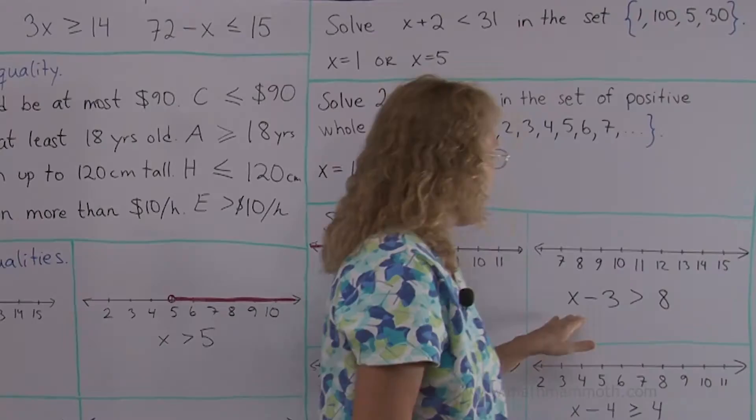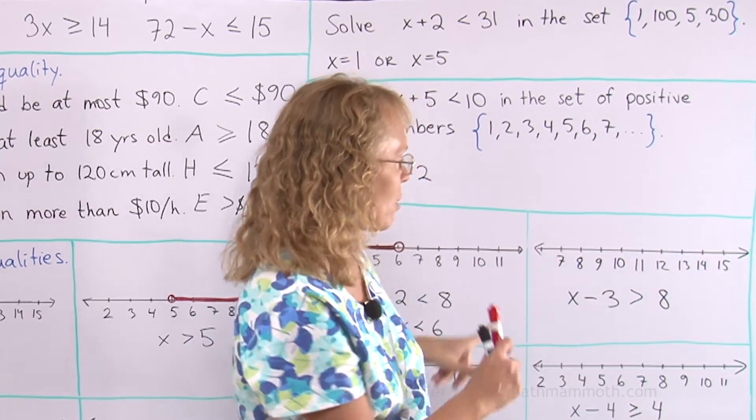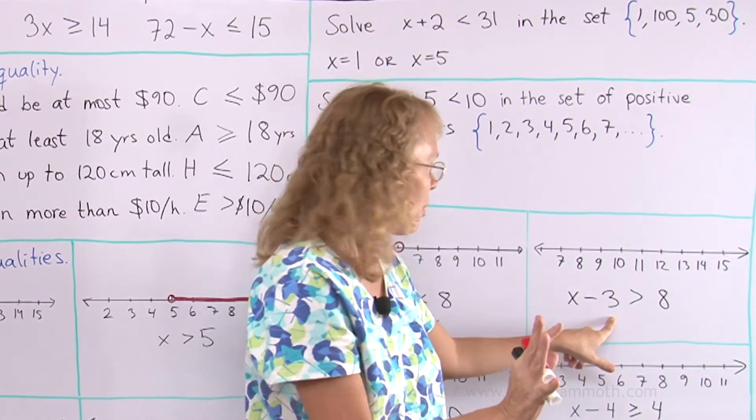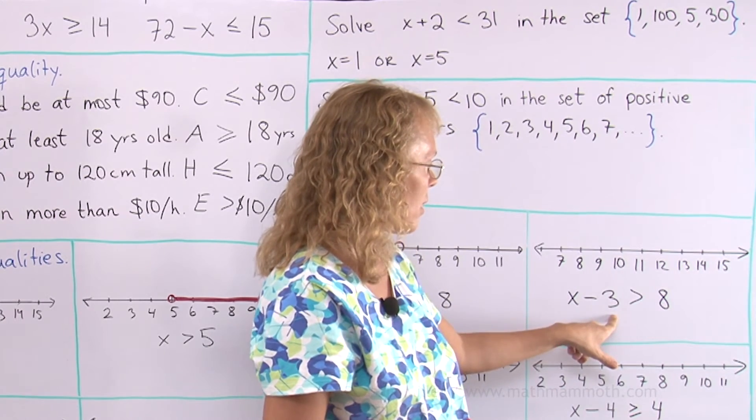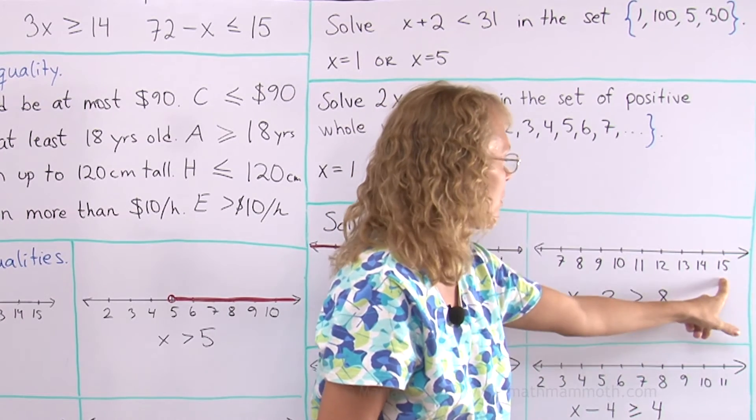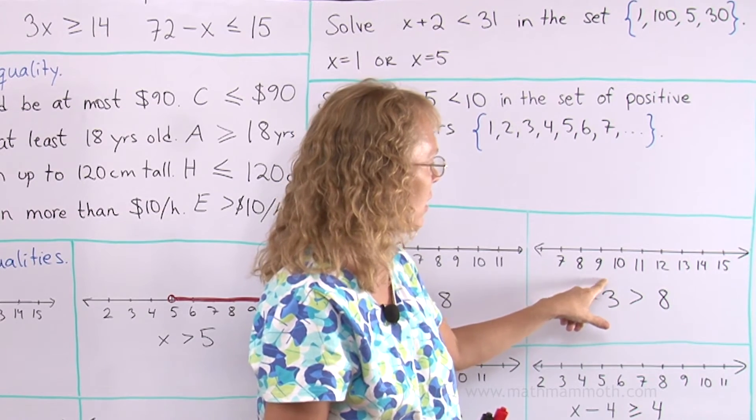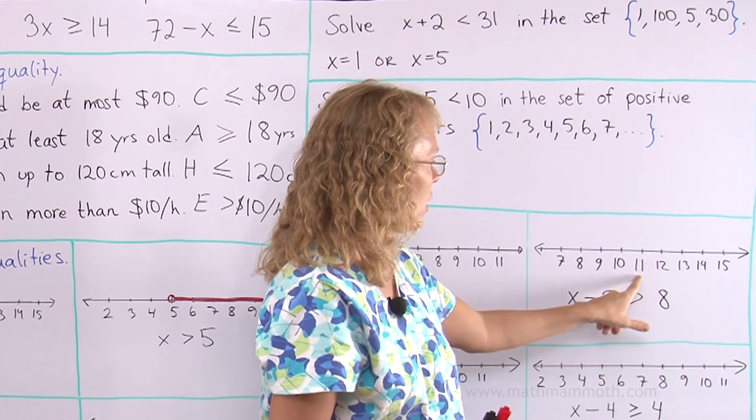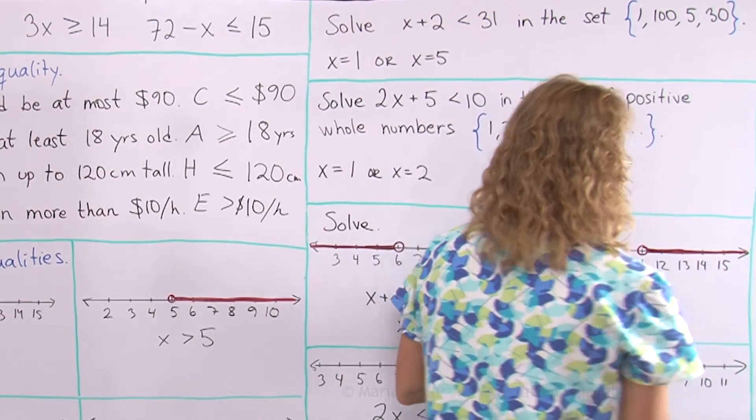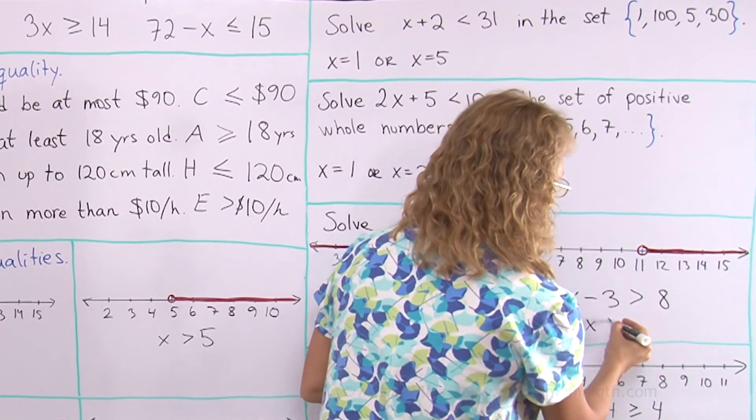x - 3 is greater than 8. Again let's just try some of those numbers. Like 11. 11 minus 3, well that's 8. That won't work. 12 minus 3 is 9. That will work. 12 will work. 13? Yes. 14? Yes. 15? Yes. How about 9? No. It gives us 6 greater than 8. 11 is like the cutoff point here. 11 will not work but everything after that. And I can write it as a single inequality here. x has to be greater than 11.